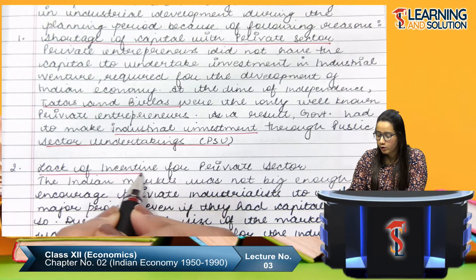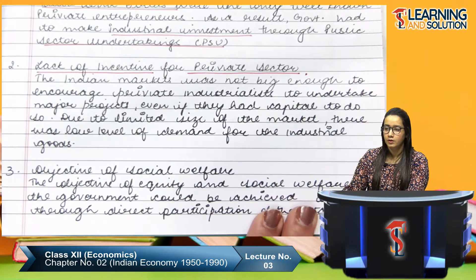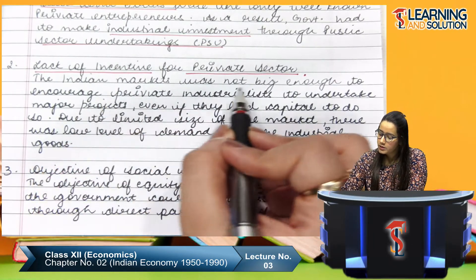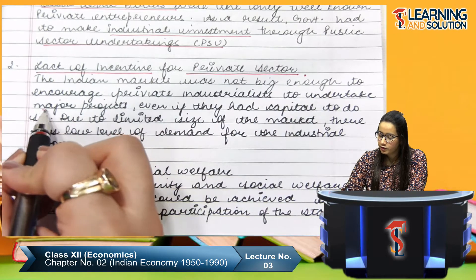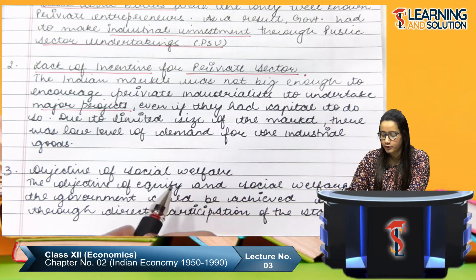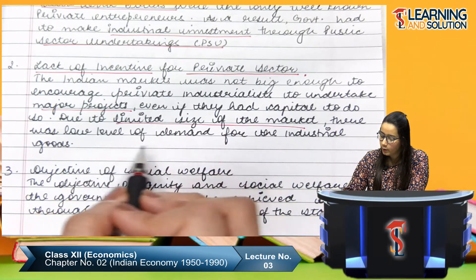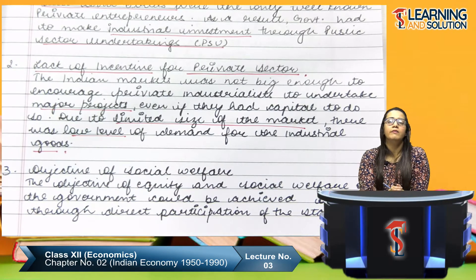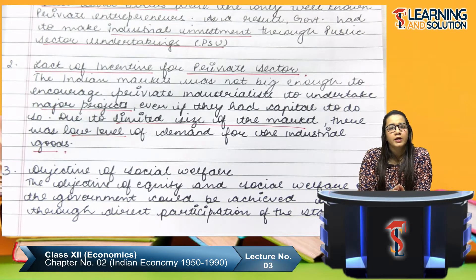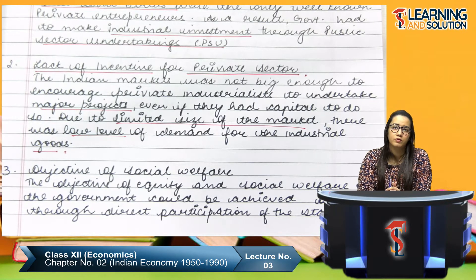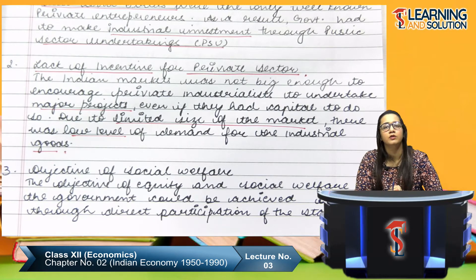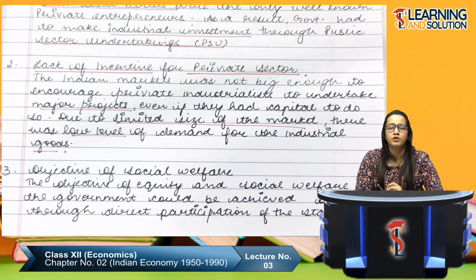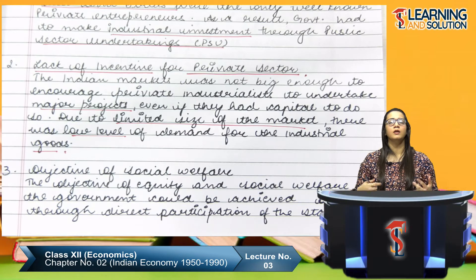The second point is lack of incentive for the private sector. The Indian market was not big enough to encourage private industrialists to take on major projects even if they had the capital. Due to the limited size of the market, there was a low level of demand for industrial goods. The private sector was not very much interested in investing because the Indian population had no money to buy their goods.